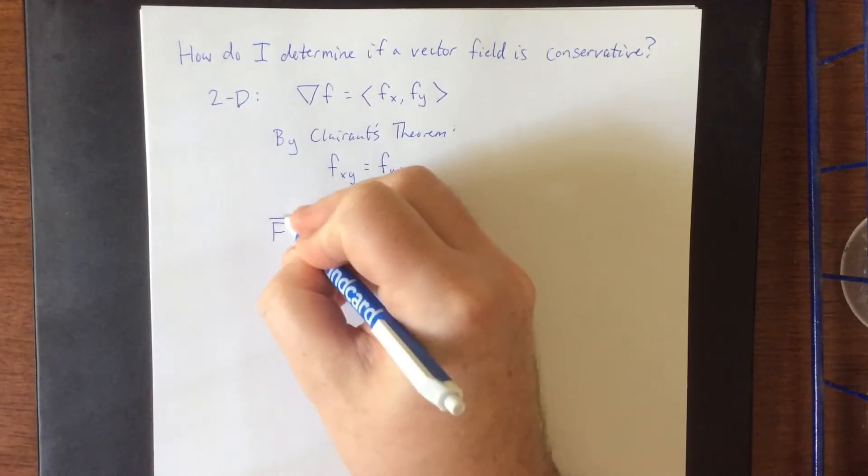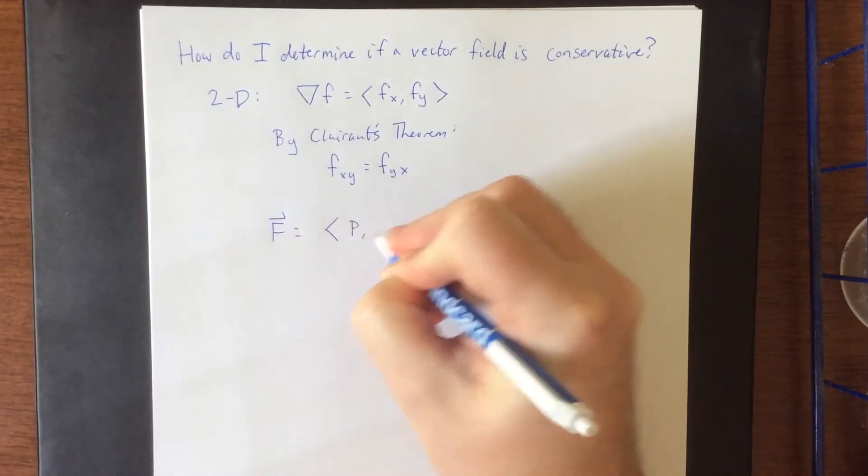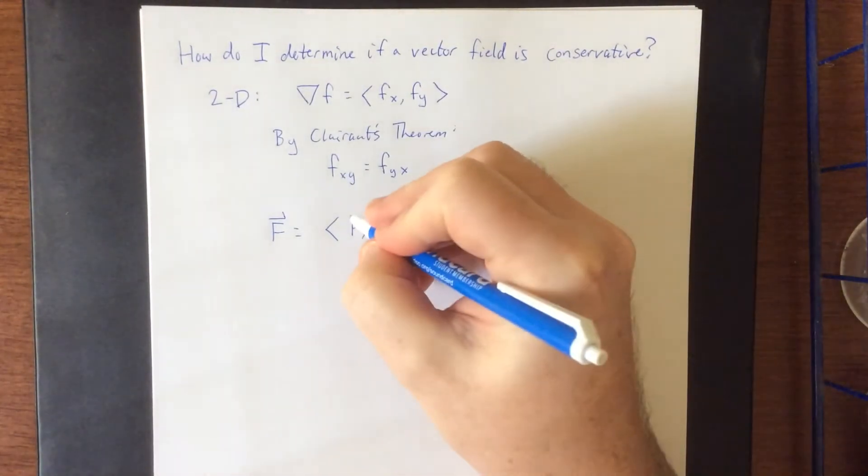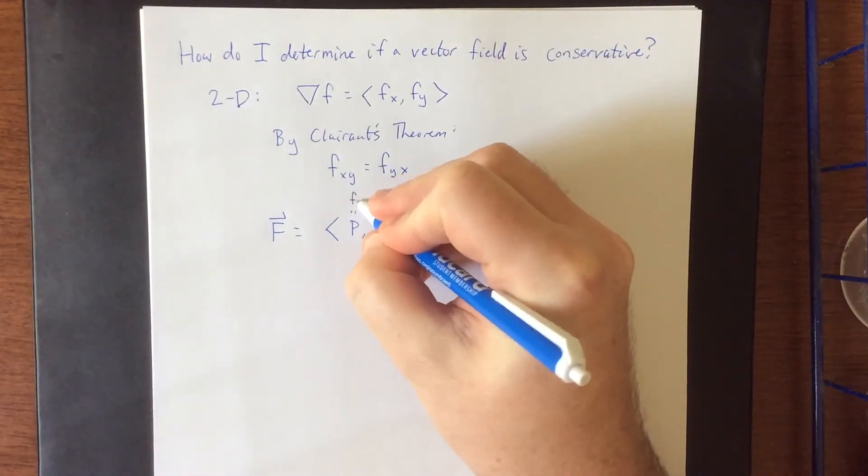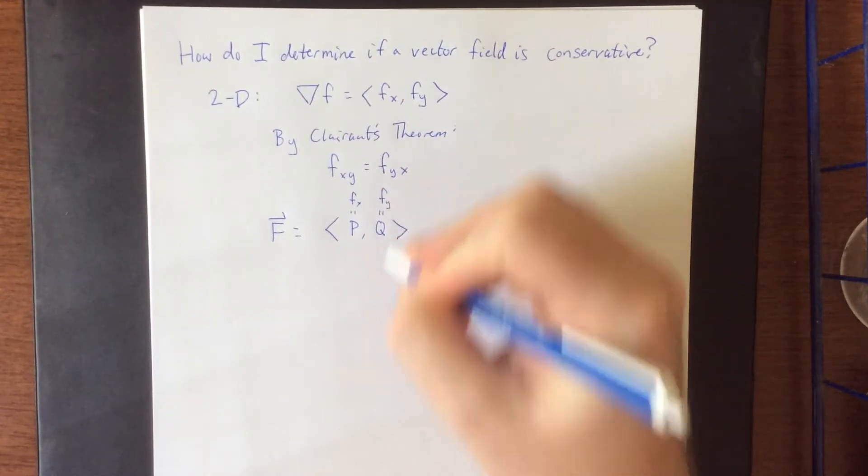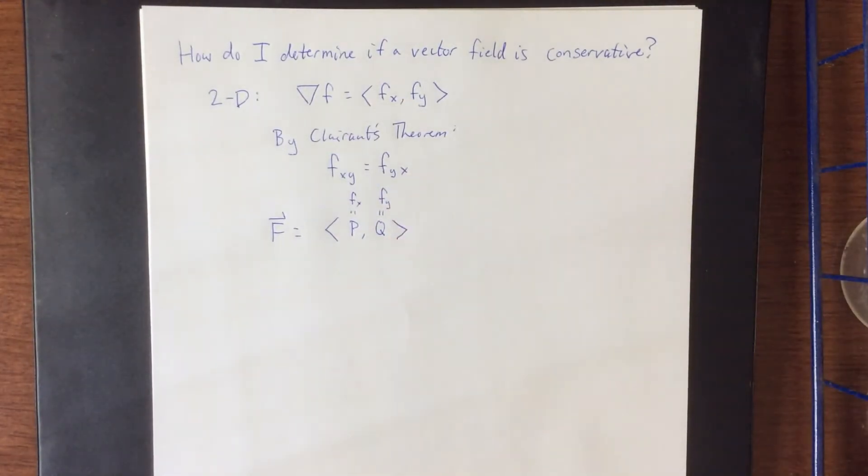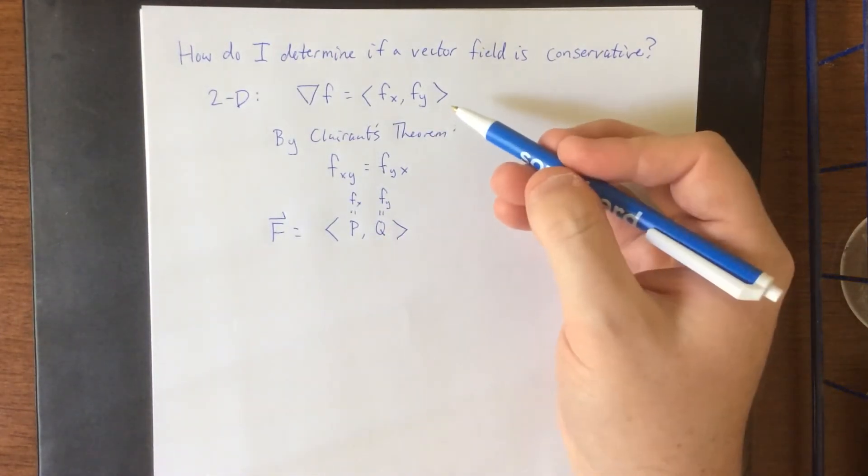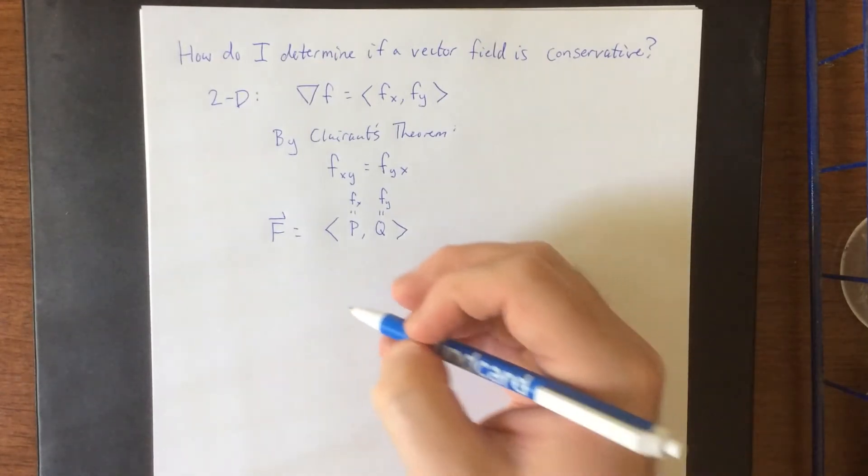So suppose that you're just given some generic looking two-dimensional vector field. Well the idea is that this would be the partial derivative of f with respect to x and this would be the partial derivative of f with respect to y. So differentiate each of these component functions with respect to whatever variable we haven't yet differentiated.